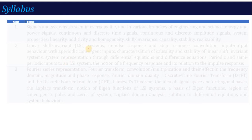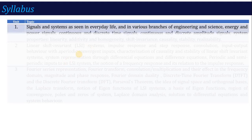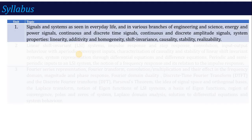This syllabus is a full credit course. A full credit course consists of 5 units. So this is unit number 1, where we will study about the basic signals and the system.